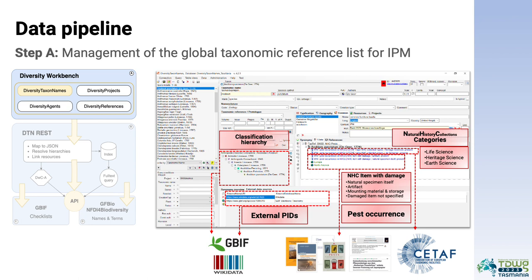Moreover, we use persistent identifiers of both GBIF and Wikidata. Additionally, information on pest presence in natural history collections is given. We indicated the CETAF major natural history collections type affected, such as heritage science, life science, or earth science. As you may know, CETAF is the Consortium of European Taxonomic Facilities. We also reported the object categories damaged, for example, natural specimens themselves or artifacts, among others. As a result, the list is kept up to date and is ready to be used for IPM solutions at any collection.